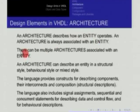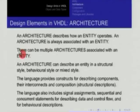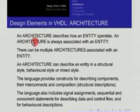For a given entity, there can be multiple architectures. For example, I may have an entity called an adder and I may have a ripple carry kind of implementation for it — that is one architecture. For the same entity adder, I can have another architecture called a carry select adder. An entity can have multiple architectures; each architecture is a different way of implementing that entity.